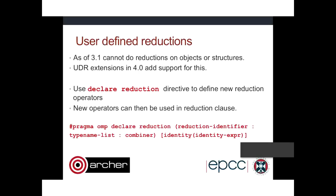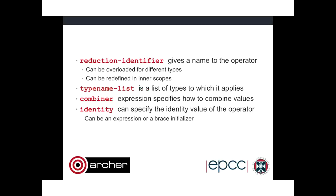OpenMP 4.0 adds user-defined reductions support so you can now define your own reduction operations using a declare reduction directive. This allows you to define the operators and then use them in the reduction clause alongside predefined ones. The syntax is: #pragma omp declare reduction, followed by a reduction identifier (the name), a list of types it applies to, a combiner function which tells the runtime how to combine private copies, and optionally an identity expression to initialize private copies.